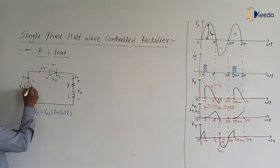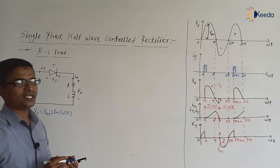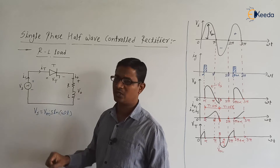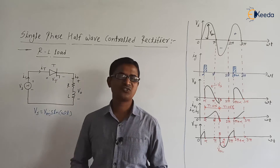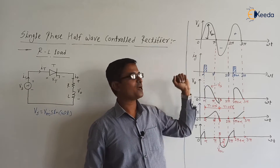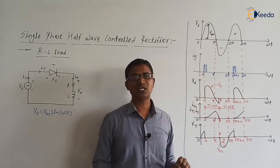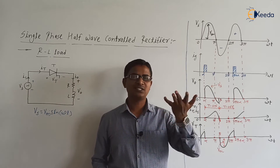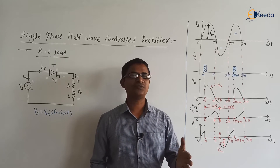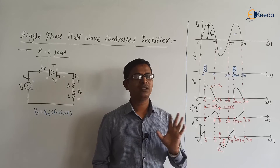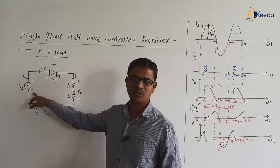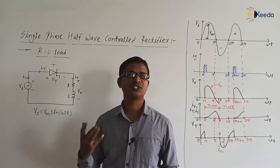From ωt = 0 to π, Vs is positive, so the polarity will have the highest potential point here and the lowest potential point here. So thyristor T will be in the forward bias mode. From zero to π, thyristor will be in the forward bias mode and we apply the gate signal to the thyristor. When thyristor is in forward bias mode and as soon as we apply the gate signal, our thyristor will turn on automatically. When Vs is negative, our thyristor will be in the reverse bias mode.